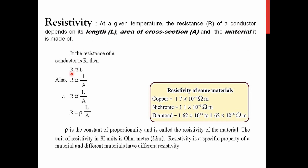Resistance is directly proportional to the length (L) and inversely proportional to the area of cross-section (A). Combining these two, we get: resistance is directly proportional to L over A. To remove the proportionality sign we introduce a constant — the Greek letter rho (ρ) — giving us R = ρL/A. Rho is the resistivity of the material. The SI unit of resistivity is ohm meter.